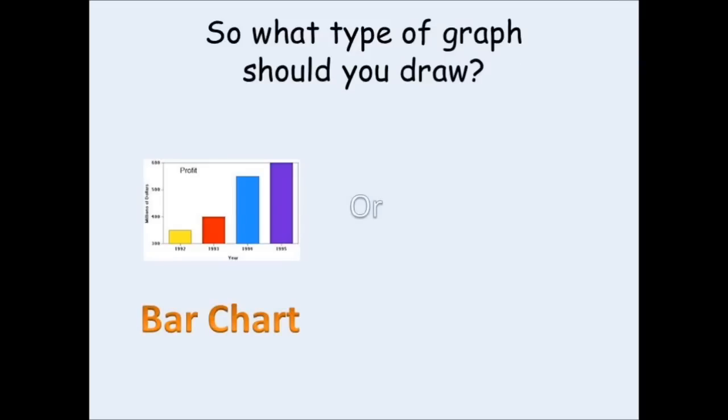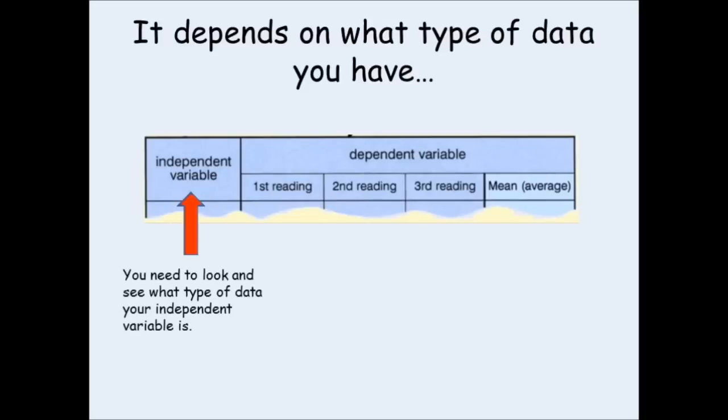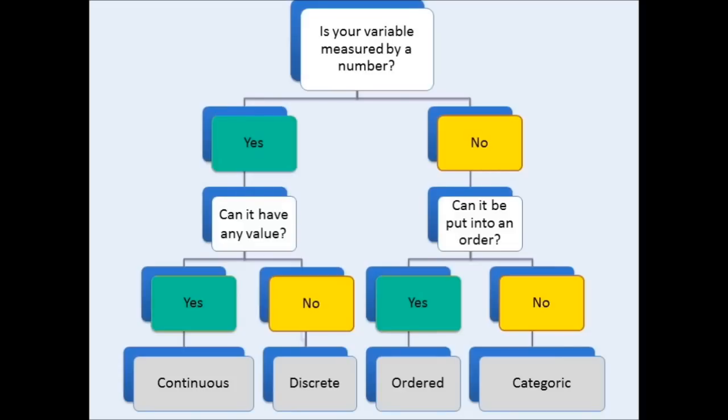So how do you know what type of graph you should draw, given that you have the choice between a bar chart and a line graph? Well, it all depends on what type of data you are presenting. More specifically, what type of variable your independent variable is. Now, to work out what sort of data your independent variable is showing, you can use this flow chart and follow the steps through. If your independent variable is measured using numbers, it could be one of two types of variables, either continuous or discrete.